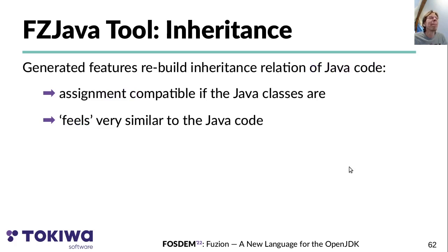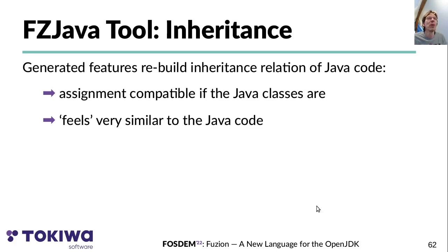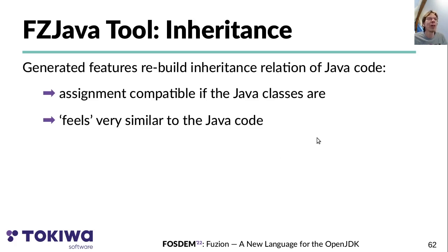The inheritance relation present in the original Java code is regenerated in the Fusion code generated for Java classes, so Fusion features inherit from the corresponding Fusion features that the original Java classes inherit from. The usage and assignment rules therefore feel very similar to the original Java code.